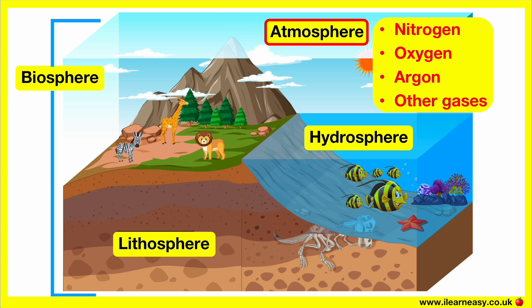The force of gravity helps to prevent vapours from escaping into outer space. The atmosphere is very important, as this is what makes the Earth inhabitable. The atmosphere also helps to create a barrier between the Earth and the Sun's rays, which can be harmful. This barrier created by the atmosphere creates a safe environment in which living things can thrive.